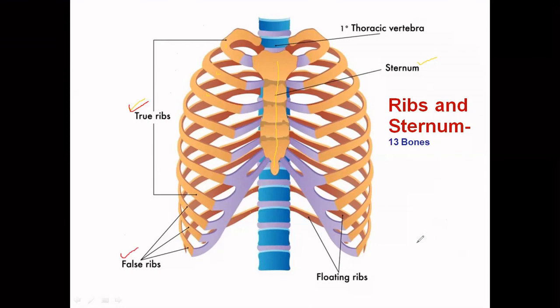The 11th and 12th ribs are not attached to the sternum, which is why they are called floating ribs. With this, we are done with the axial skeleton.